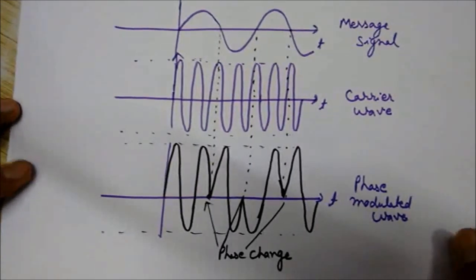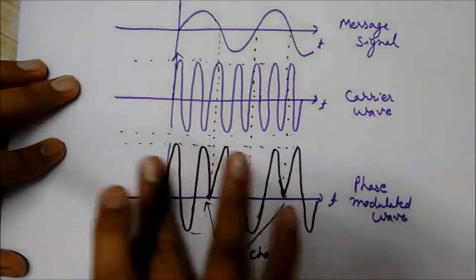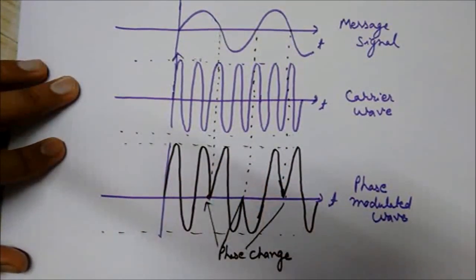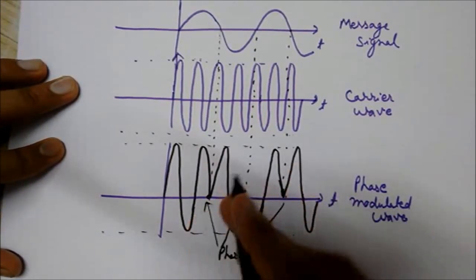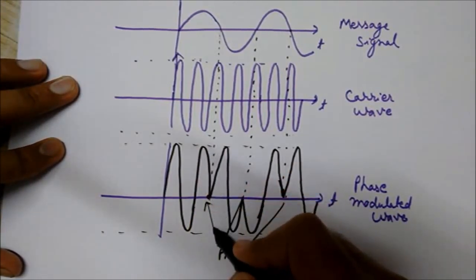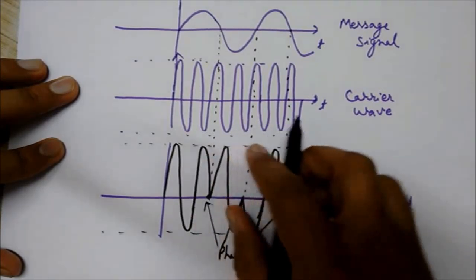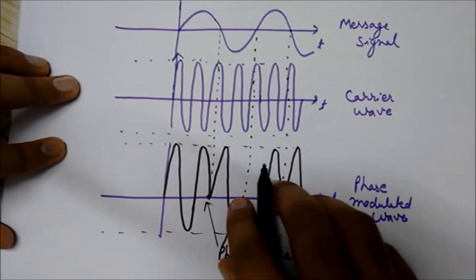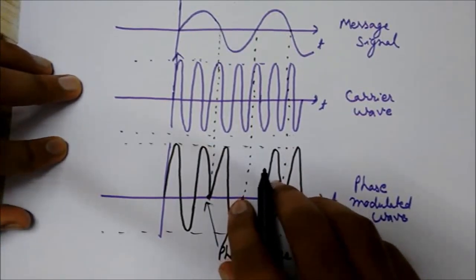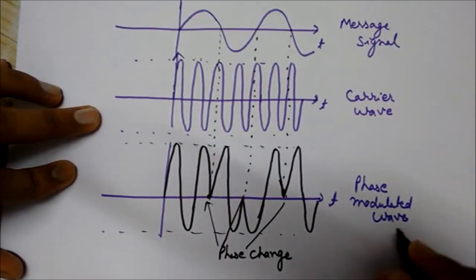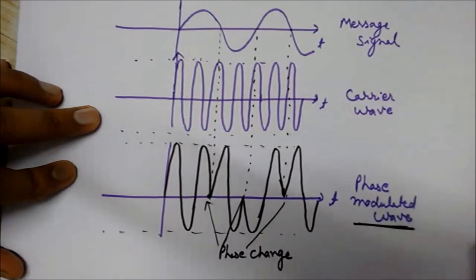So the phase change means just the horizontal shifting of this wave. We have shifted this wave. This, the original path was in this direction. Its shape would have been like this. But we have shifted this wave in the horizontal direction. So this was the phase modulated waveform.